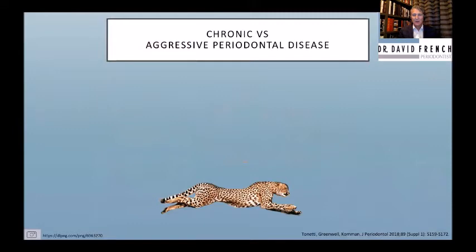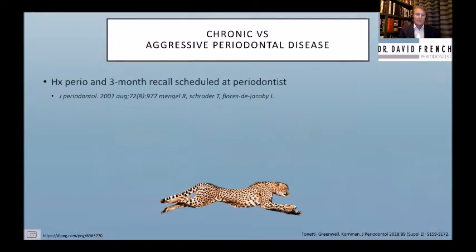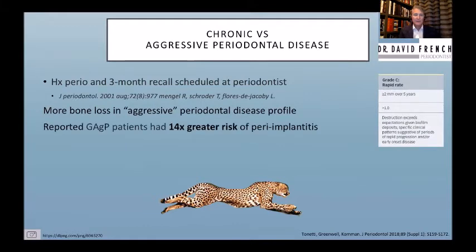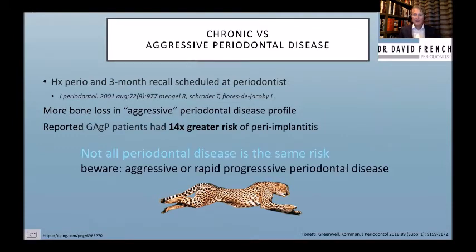We must also differentiate the type of periodontal disease — chronic versus aggressive. Florida Jacob's study showed patients on recalls with rapid progressive versus chronic perio, and found about 14 times greater bone loss in aggressive perio cases. Today we call them grade C rapid progressive rather than generalized aggressive. A couple of 6 mm pockets in a 50-year-old with poor hygiene is not the same concern as multiple 6–8 mm pockets in a mid-30s patient — that's a whole different animal.